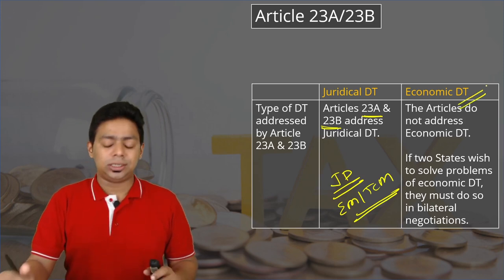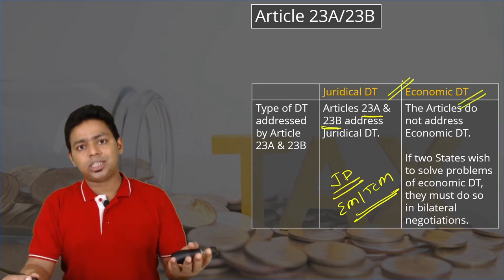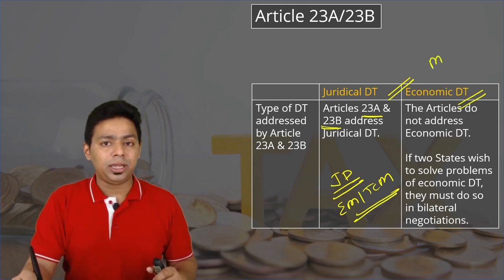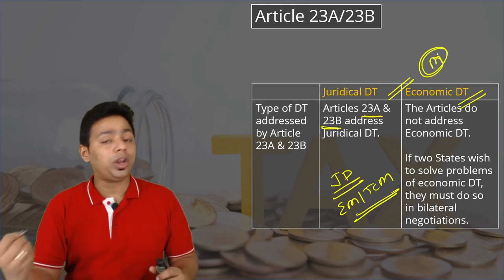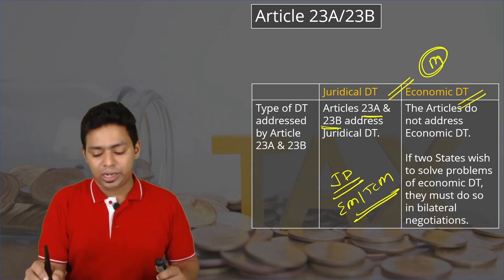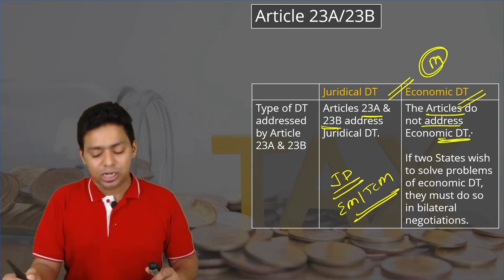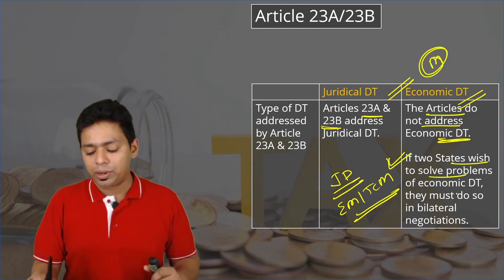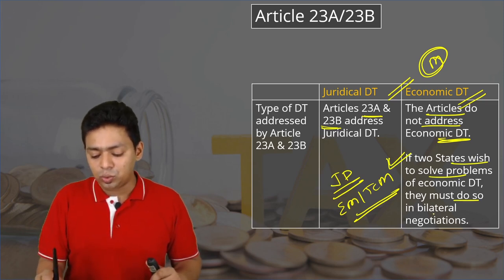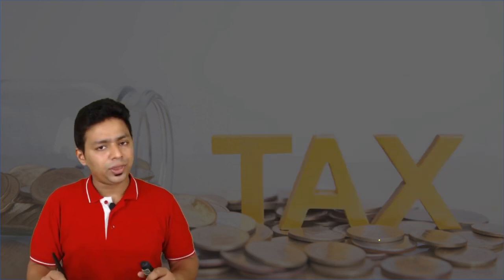But if it is economic double taxation, then research has to happen and mutually both states should come up with a solution. The articles do not address economic double taxation. If two states wish to solve the problems of economic double taxation, they must do so through bilateral negotiation.